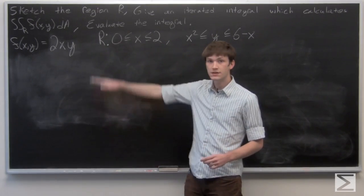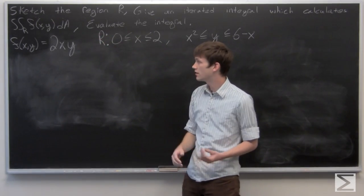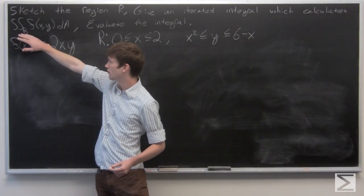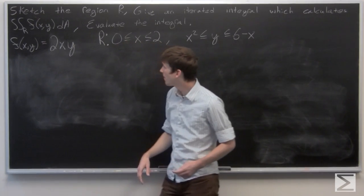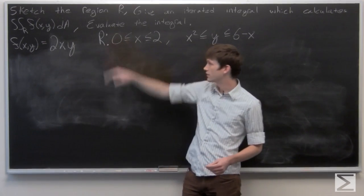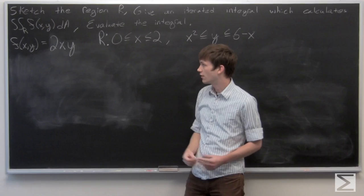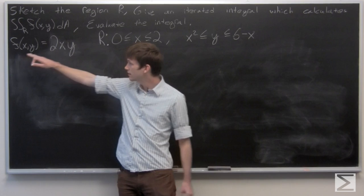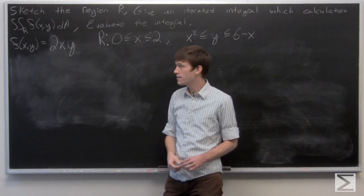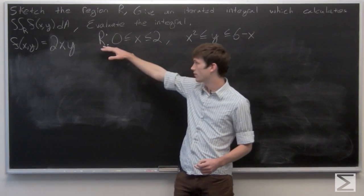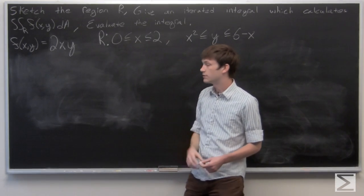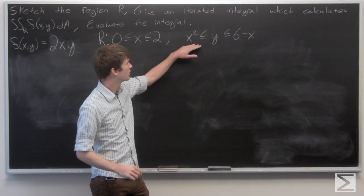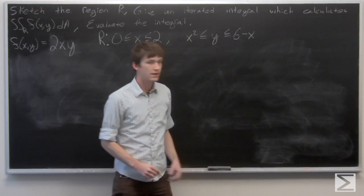In this problem, we're asked to sketch the region R, give an iterated integral that calculates our double integral of f(x,y) over the region R, and then evaluate that iterated integral. We're given that f(x,y) = 2xy, and our region R is defined by x between 0 and 2, and y between x² and 6 minus x.